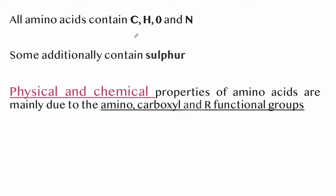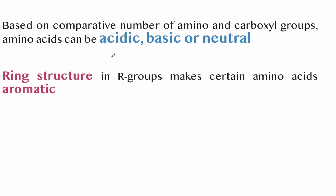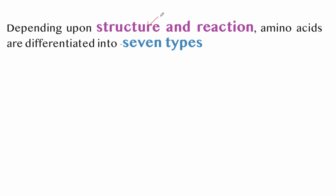Amino acids contain carbon, hydrogen, oxygen, and nitrogen; some additionally contain sulfur. The physical and chemical properties of amino acids are mainly due to the amino group, carboxyl group, and R group. Based on the comparative number of amino and carboxyl groups, amino acids can be acidic, basic, or neutral. Ring structures in R groups make certain amino acids aromatic. Depending upon structure and reaction, amino acids are differentiated into seven types.